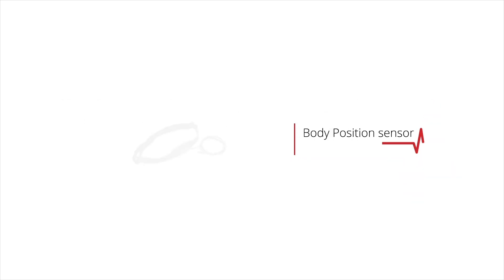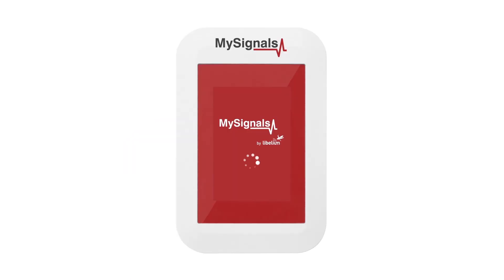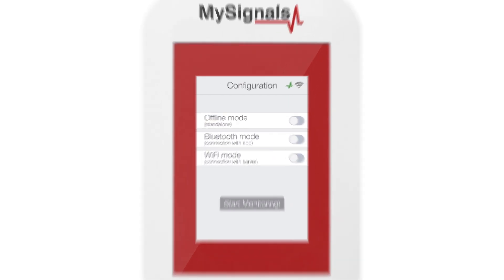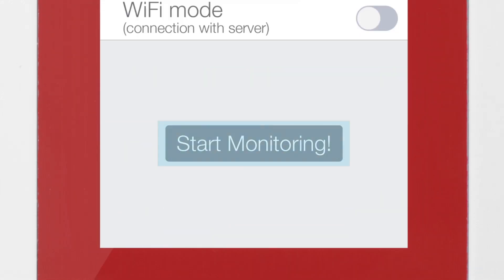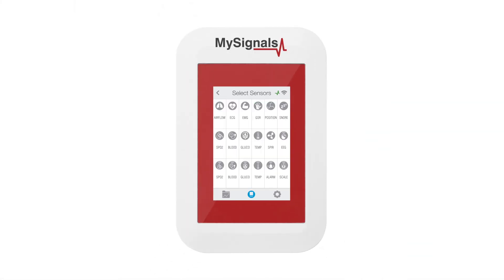How to use the body position sensor in MySignals. First, power on MySignals — it goes directly to the configuration menu. Select offline mode in the menu and click on the start monitoring button.